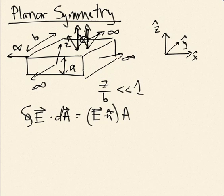With perfect planar symmetry — infinite slabs — the only direction field lines can go is straight up along the z-axis. There's no way for field lines to spread out at all; they just go straight. The only way to change the electric field strength is to be standing on charges. Above the slab, there's no charge density, so field lines keep going straight up without separating — the distance between them never changes — and the field is constant above and below.